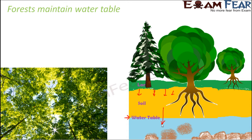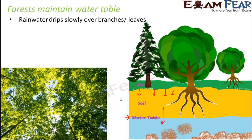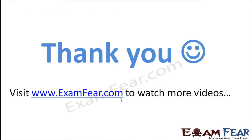This way, water reaches the soil gradually rather than all at once. Once it reaches the soil, it percolates through the spaces between soil particles and enters inside, finally becoming part of the groundwater. Comparing soil to a marble floor — water does not seep through marble, but it does seep through soil. That is how forests help to maintain the water table: rainwater drips slowly over branches and leaves, gradually reaches the soil, and percolates deep inside.